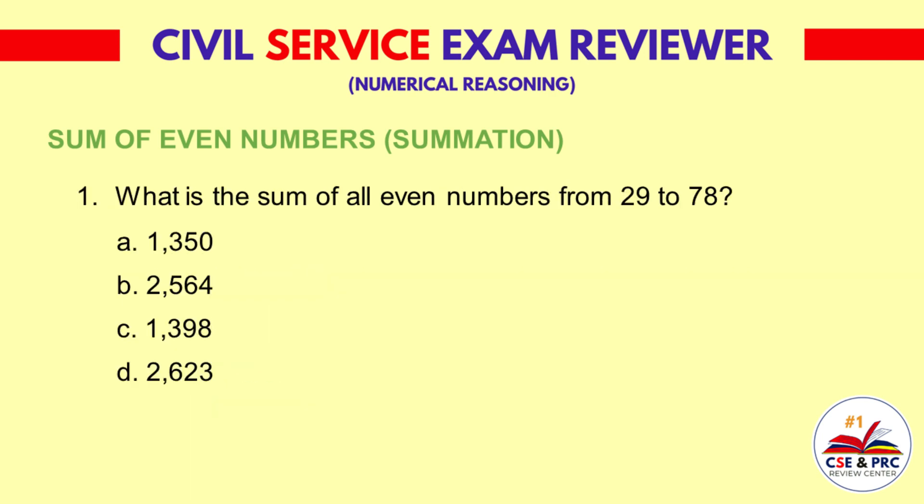Question 1: What is the sum of all even numbers from 29 to 78? a. 1,350  b. 2,564  c. 1,398  d. 2,623